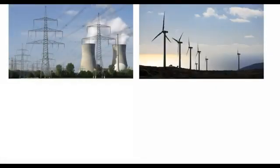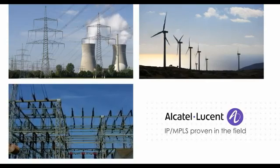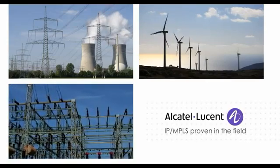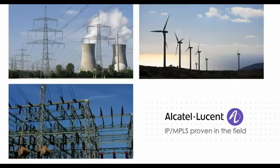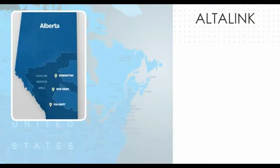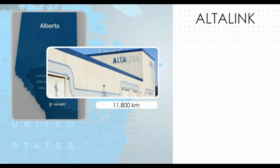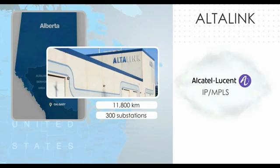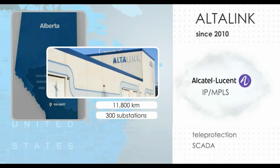The capability of Alcatel-Lucent IP MPLS networks to support teleprotection is not only proven in the lab, it is proven in the field. For example, AltaLink, a transmission operator in Alberta, Canada with 11,800 km of lines and 300 substations, has successfully operated a converged IP MPLS network in a production environment since September 2010, supporting teleprotection, utility SCADA, and other operational voice and data traffic.